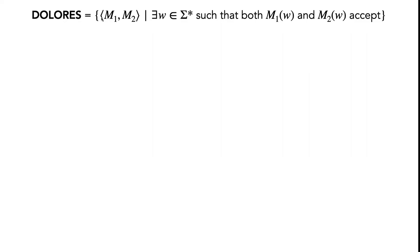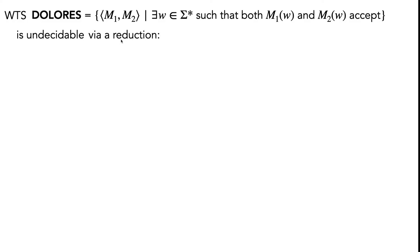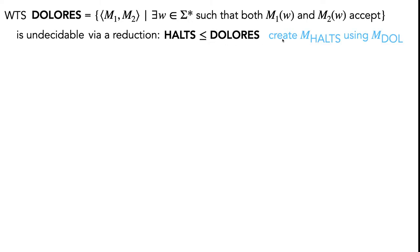Now let's move on to DOLORES. DOLORES is the language of strings that are encodings of a pair of Turing machines, such that there exists a string w from Σ* where both the first and second Turing machine accept on that input w. We want to show that DOLORES is undecidable via a reduction — specifically, that HALTS reduces to DOLORES, meaning we can create a decider mHALTS using a decider for DOLORES. This is a good time to pause and try the proof yourself using what we learned from the last problem.